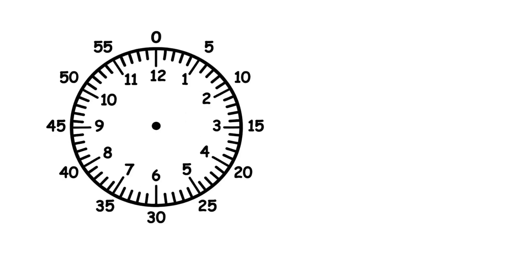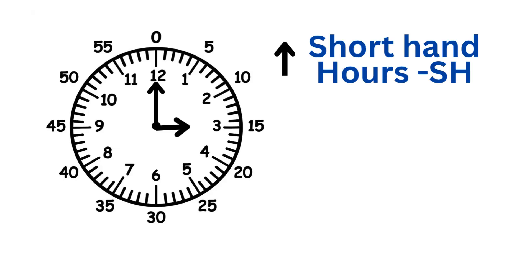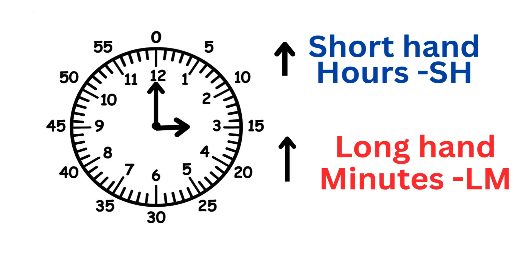Look at a regular clock. You'll notice two main hands. The short hand shows the hours — we'll call it SH. The long hand shows the minutes — we'll call it LM.